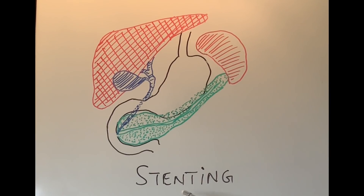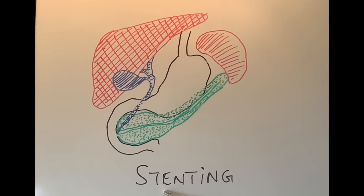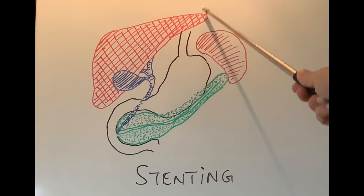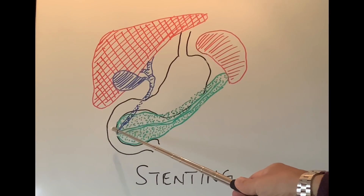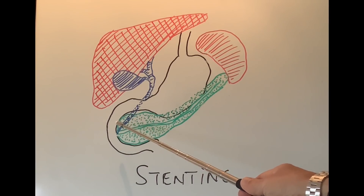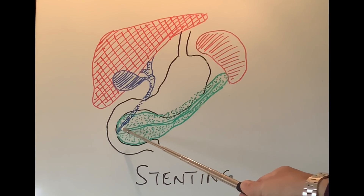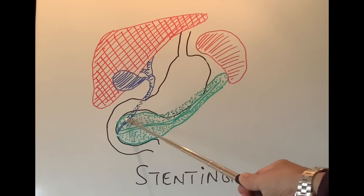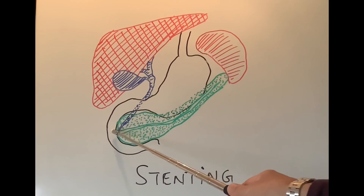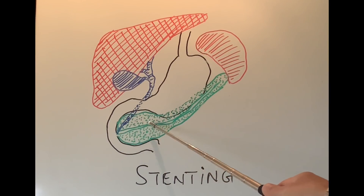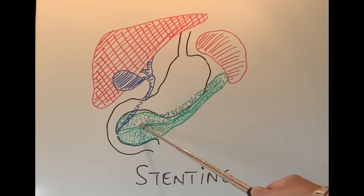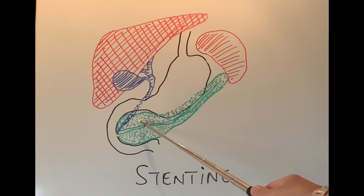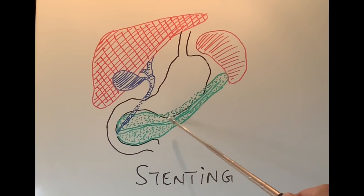The first procedure we are going to talk about is stenting. Stenting is done through a camera test or an endoscopy, which is put through the mouth into the stomach and into the duodenum. A little tube — either made out of plastic or a special metal — can be put inside the pancreatic duct or sometimes inside the bile duct, depending on where the blockage is. This is usually done for blockage of the pancreatic duct or bile duct. The plastic tube goes across the blockage, so if the pancreatic duct is tight or narrow — due to scarring or whatever reason — the tube goes across it and helps drain the pancreas.